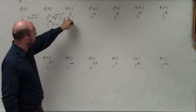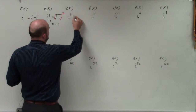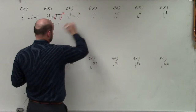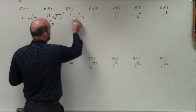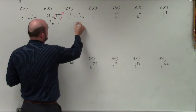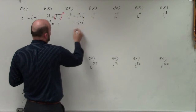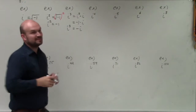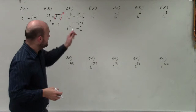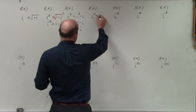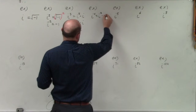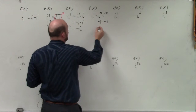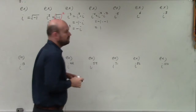If we do i cubed, we can follow that and say that's going to be i squared times i. We know that i squared is negative 1, times i is just going to leave us with negative i. So therefore, i cubed is equivalent to negative i. And then if we go to i to the fourth, we can rewrite that as i squared times i squared. We know that i squared is negative 1 times negative 1, and that's going to equal positive 1.